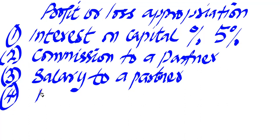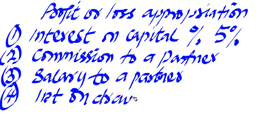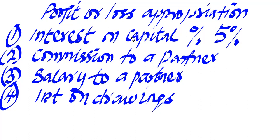Number four is interest on drawings. These are items that can appear in the body of the profit or loss appropriation — things the partners did individually that affect the partnership's profit positively or negatively. If you have interest on drawings in the question paper, reflect it. If it is not given, there is no formula to calculate it — just ignore it. But if it is given, attribute it to the profit or loss appropriation.